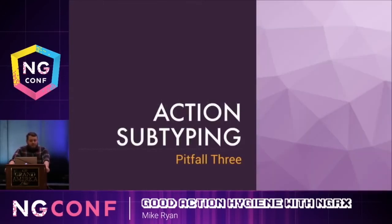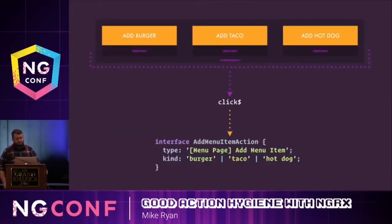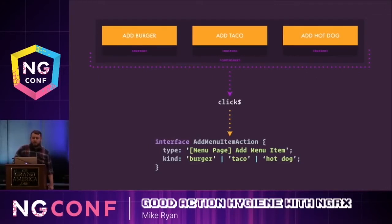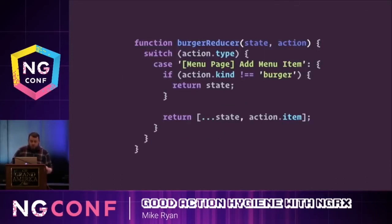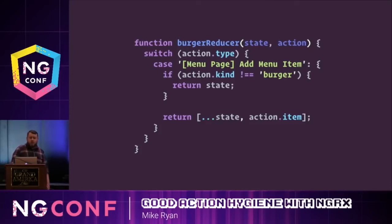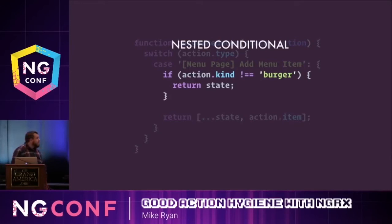The third pitfall is action subtyping. Developers fall into this pit when they want to handle click events for multiple options, or handle API responses and errors in a generic way. The reason this is problematic is it starts to introduce conditional branches all throughout your application, and these nested conditionals are really going to add up when you go to write unit tests.